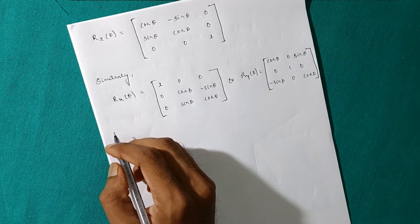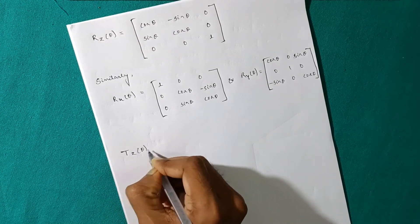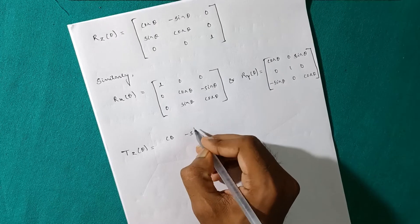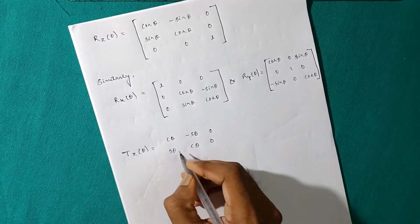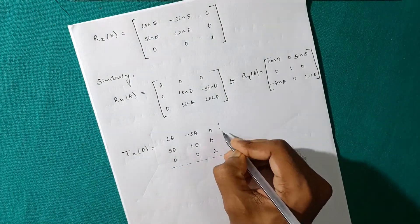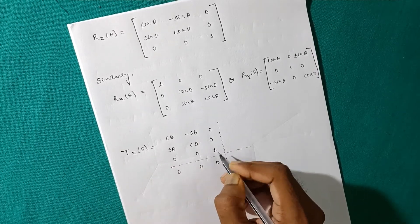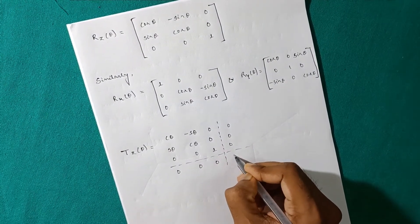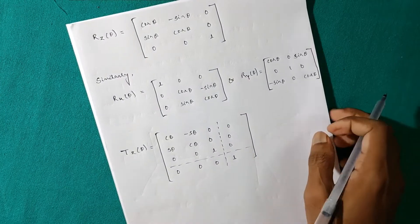We can also find out the transformation matrix T. T_z(theta) equal to cos theta, minus sin theta, 0; sin theta, cos theta, 0; 0, 0, 1. If we add a perspective transformation matrix that is 0, 0, 0 and here a translation vector of 3 by 1 that is 0, 0, 0, and this is 1 known as scale factor. So here it is the transformation matrix for Z axis. Thank you.